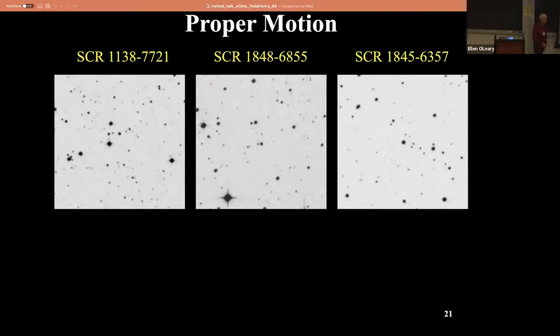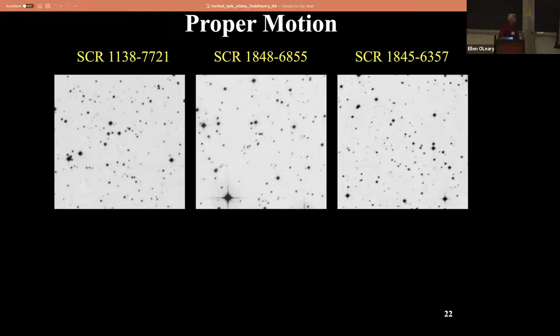Let's play a game - we're going to measure some proper motions by eye. These are three SuperCOSMOS images of SCR stars - SuperCOSMOS RECONS survey stars. I'm going to blink them the way it used to be done many years ago with a blink comparator, where you looked in two things that had a plate on each one and could see things move.